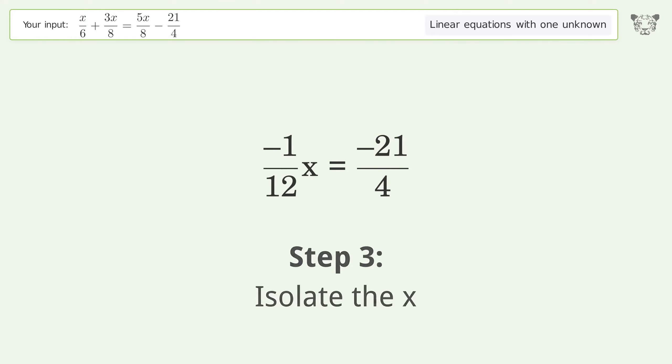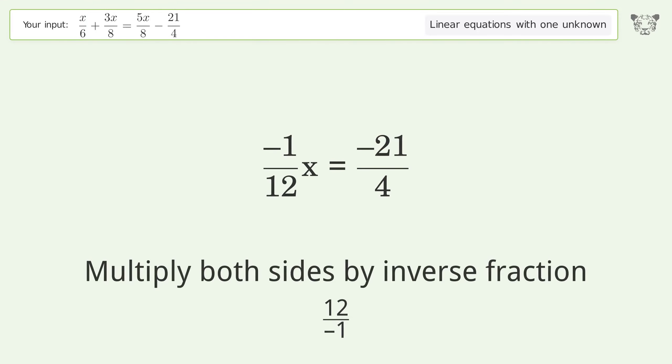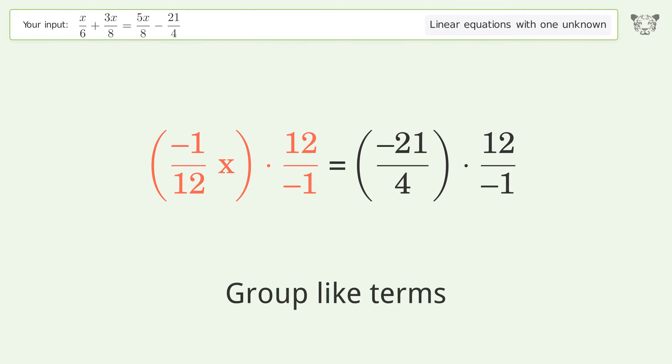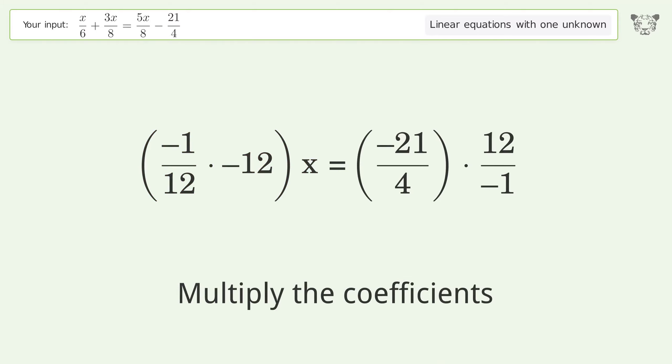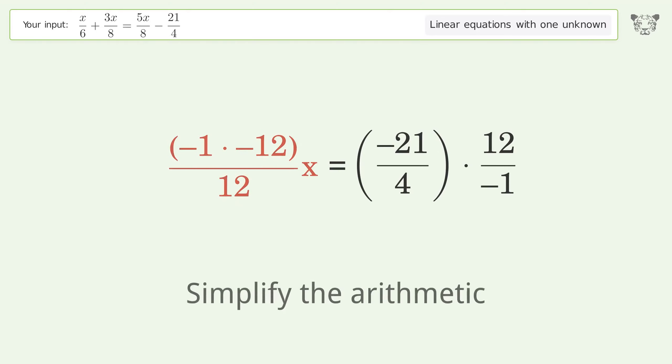Isolate the x by multiplying both sides by the inverse fraction, 12 over negative 1. Group like terms, multiply the coefficients, then multiply the fractions and simplify the arithmetic.